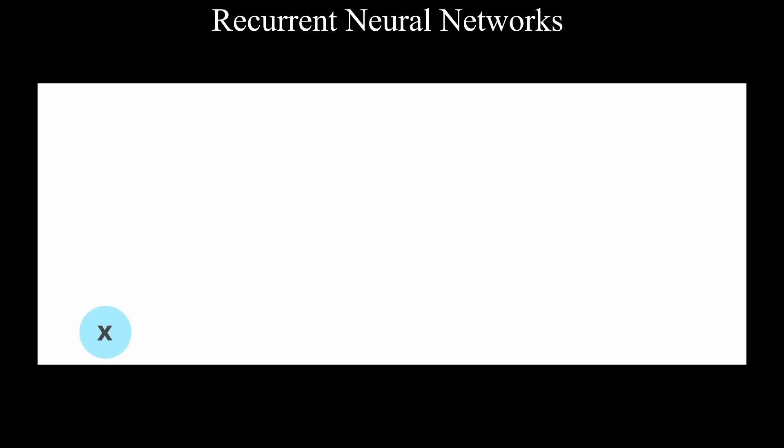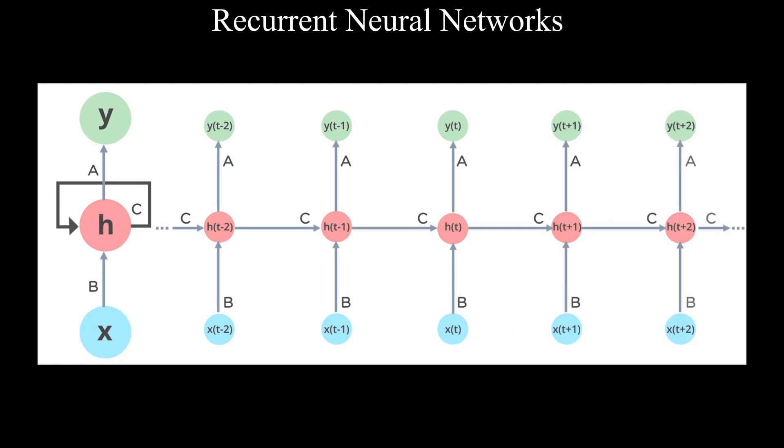Before transformers, recurrent neural networks in encoder-decoder architecture were used for neural sequence transduction. RNNs are good at learning from sequential data but there are few limitations. Let's discuss two of them in order to understand the significance of the transformers.